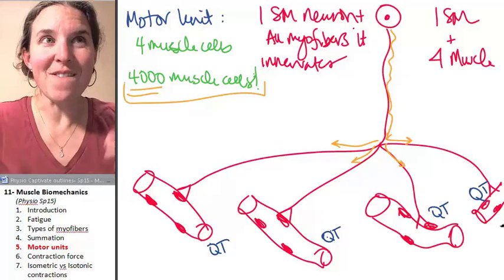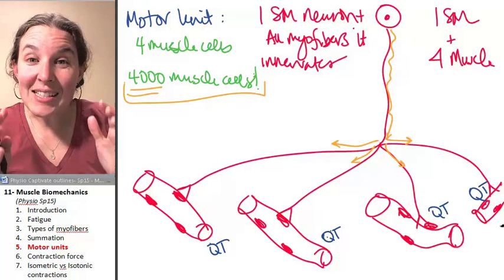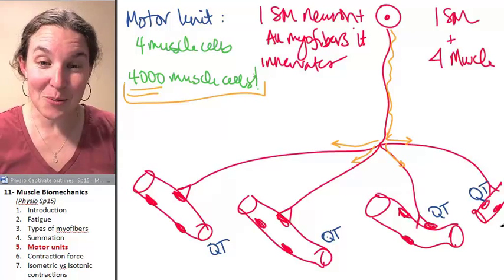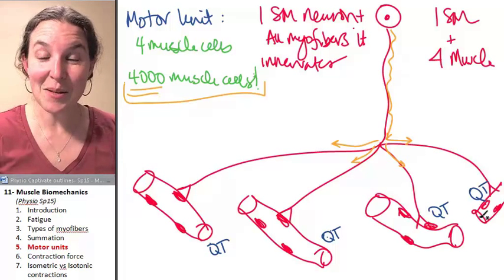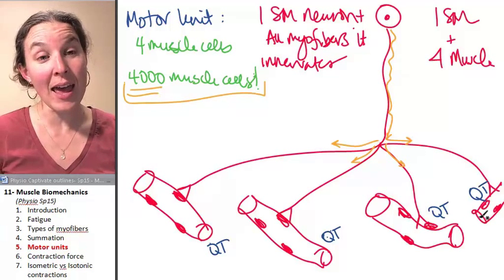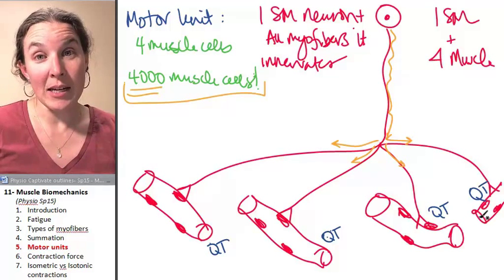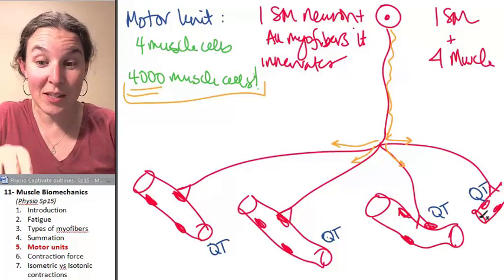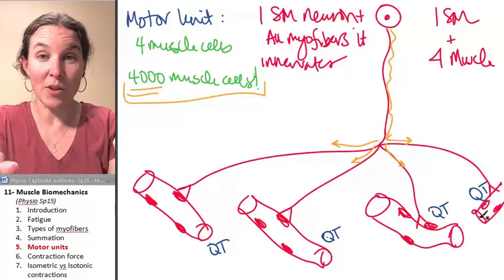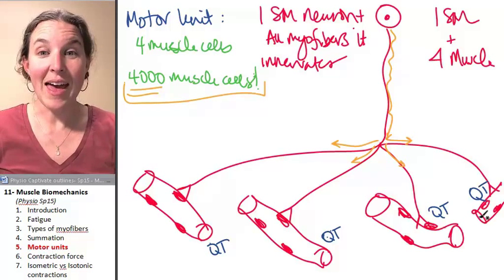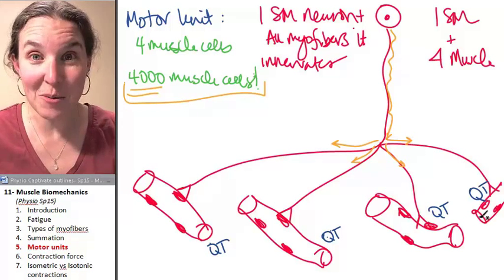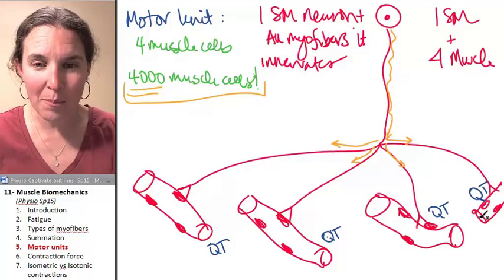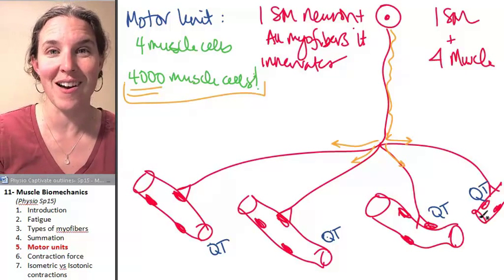A motor unit, this is so cool. That somatic motor neuron when you were a baby and these were little baby muscle cells, that somatic motor neuron said, hey, guys, if you're going to be on my team, then you need to be my kind of muscle fiber. And so the somatic motor neuron reached out and started making contact with all these different myofibers and basically told them, you have to be a quick twitch fiber because that's the way I roll. And they all became quick twitch fibers because their somatic motor neuron told them to.